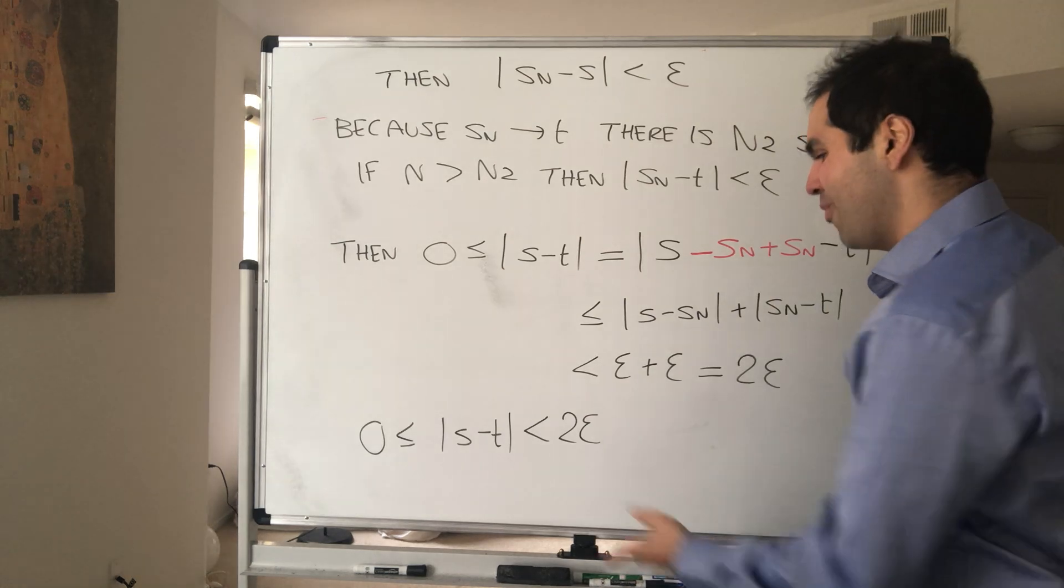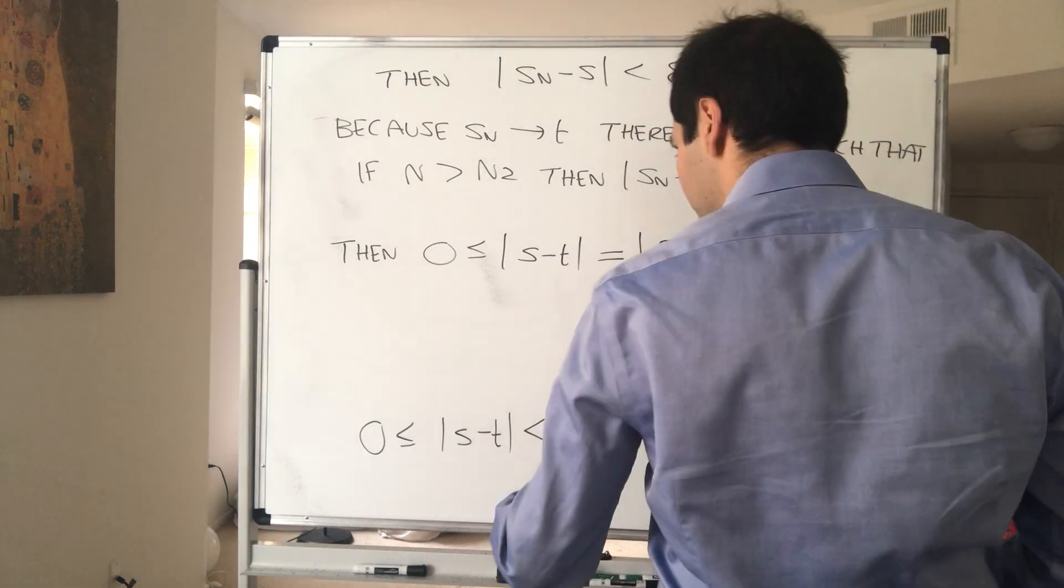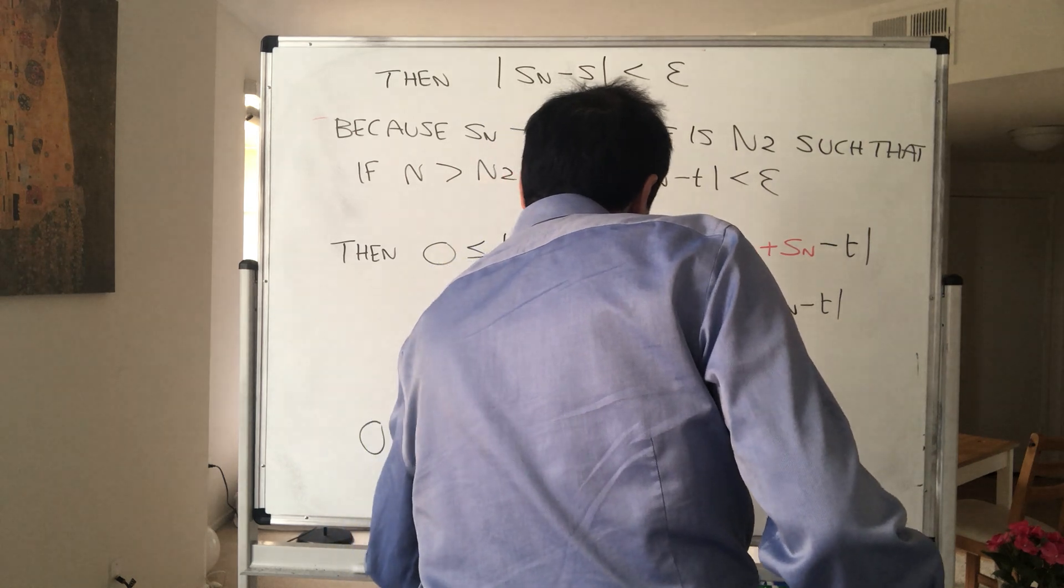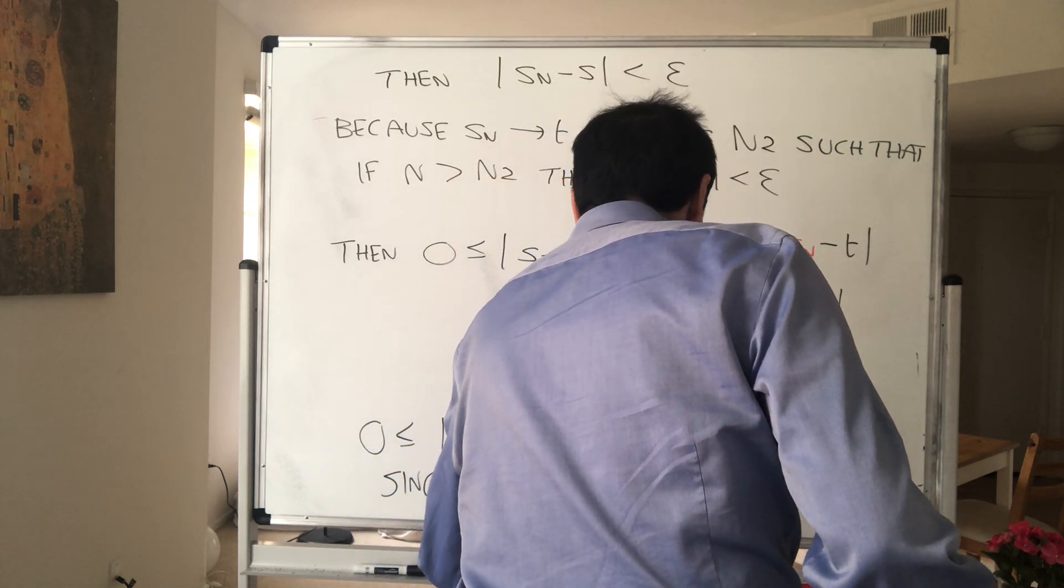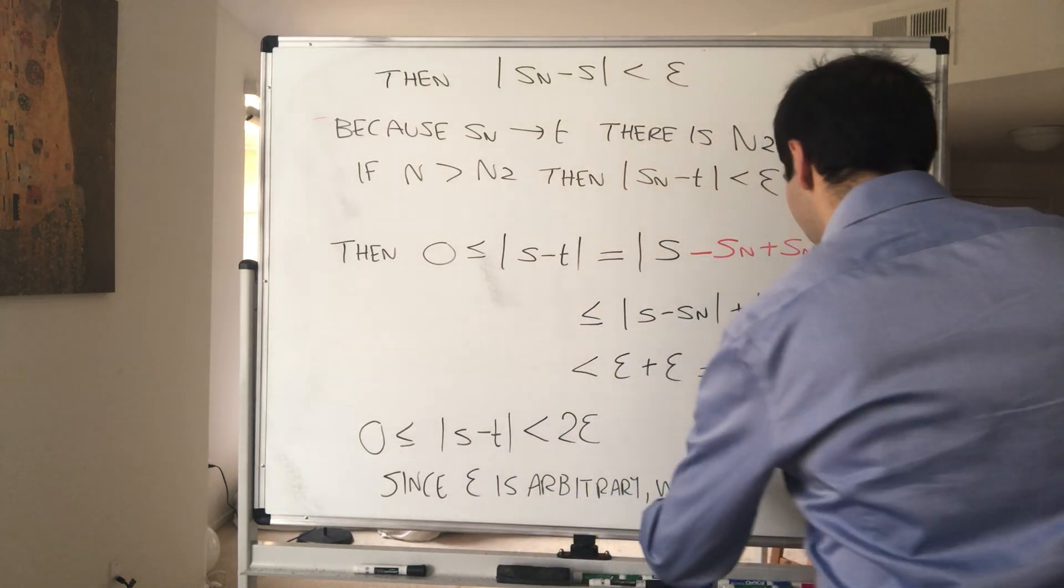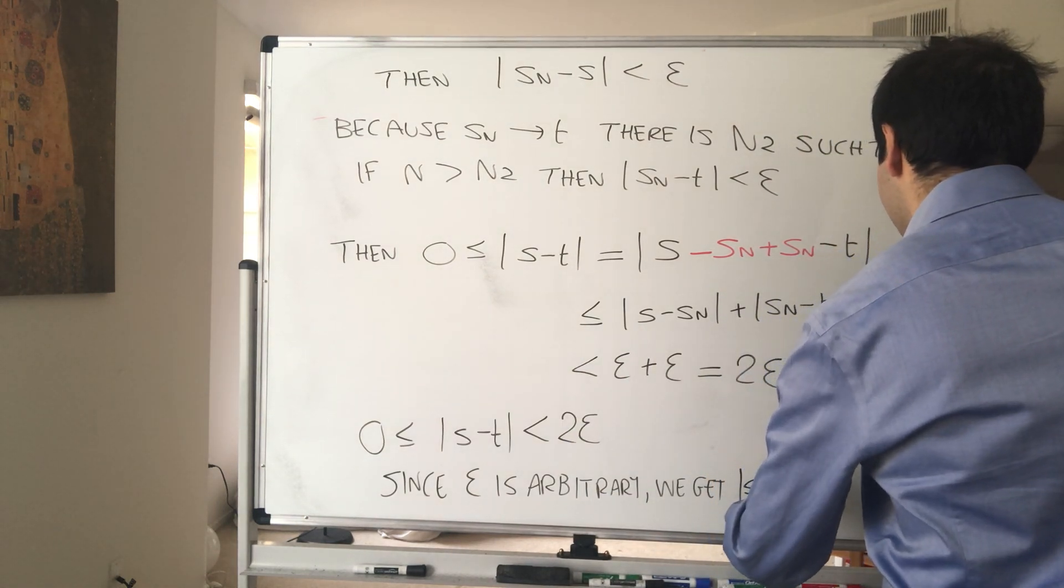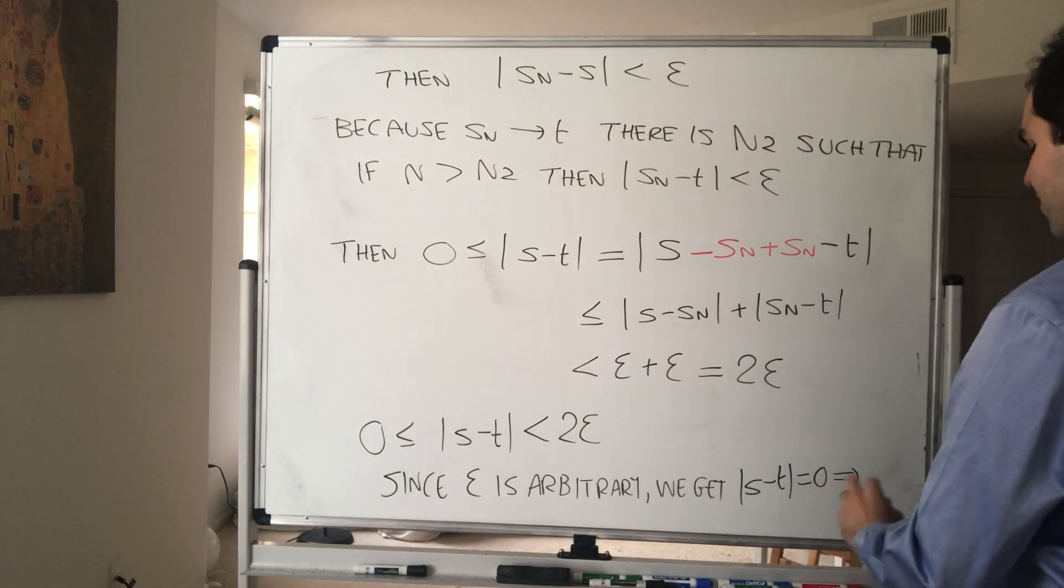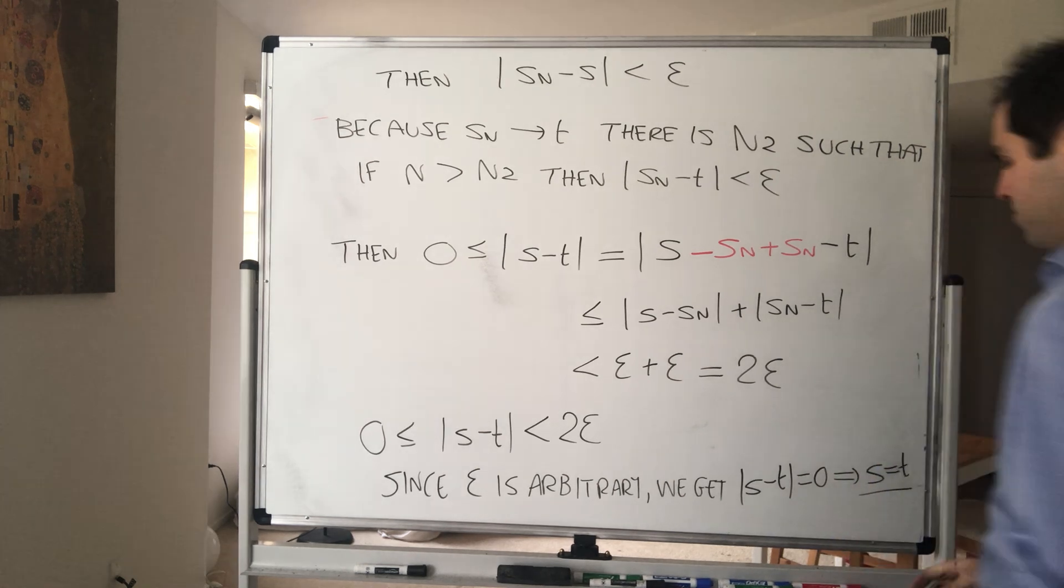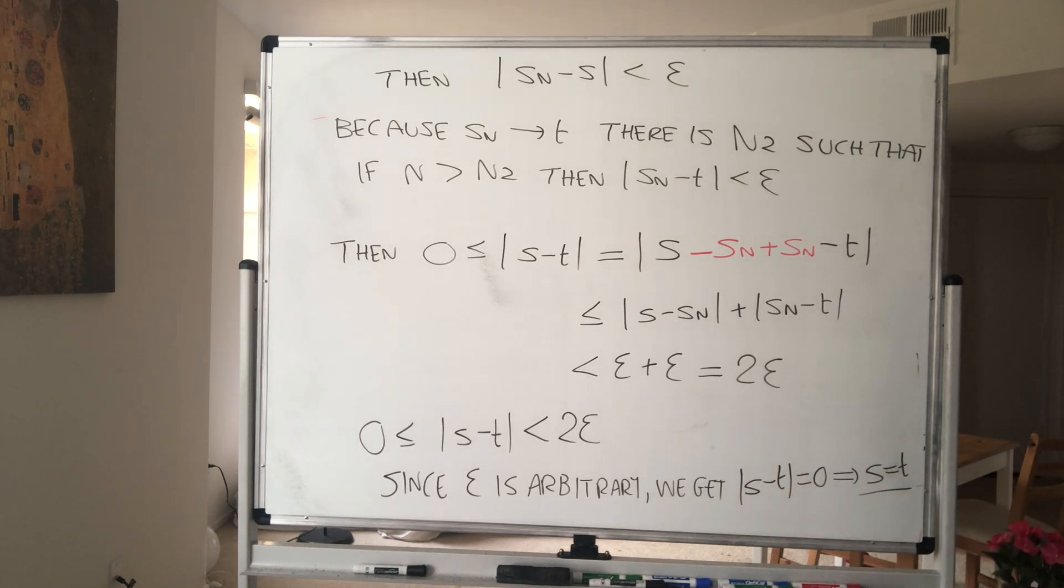is arbitrary, we get simply that this middle number is basically squeezed between 0 and 0. So it has to be 0. And the only way absolute value of this is 0 is if those two numbers are the same. So if S equals T. Simply speaking, if S minus T is 0, but that's the same thing as S equals T.